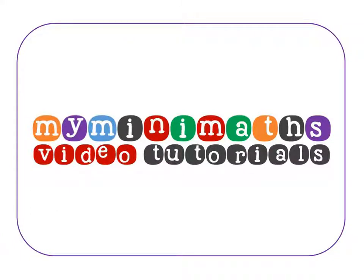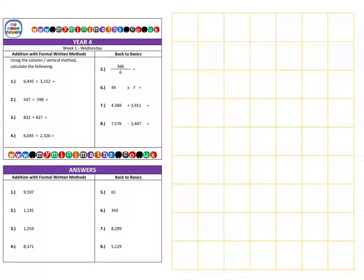Hello and welcome to today's MyMiniMaths.co.uk video tutorial. Today we're going to be adding three digit and four digit numbers together, and there's going to be a focus on carrying values over to the next column. So on to the first question.